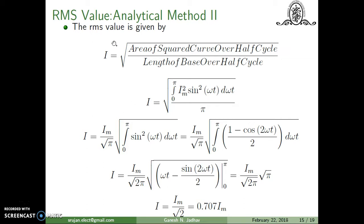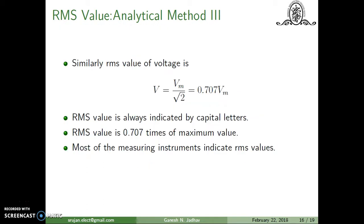Keep in mind the RMS value is always indicated by a capital letter. I = Im/√2 = 0.707 times the maximum value, or equivalently Im = √2 times the RMS value. Similarly for voltage, V = Vm/√2 = 0.707 times the maximum value. Most measuring instruments indicate RMS values.